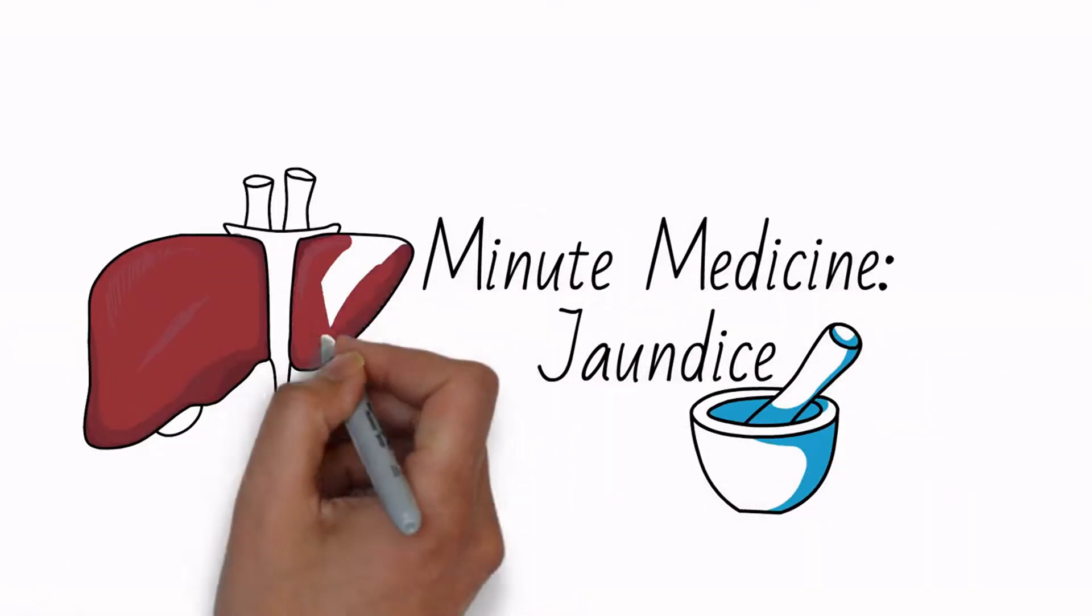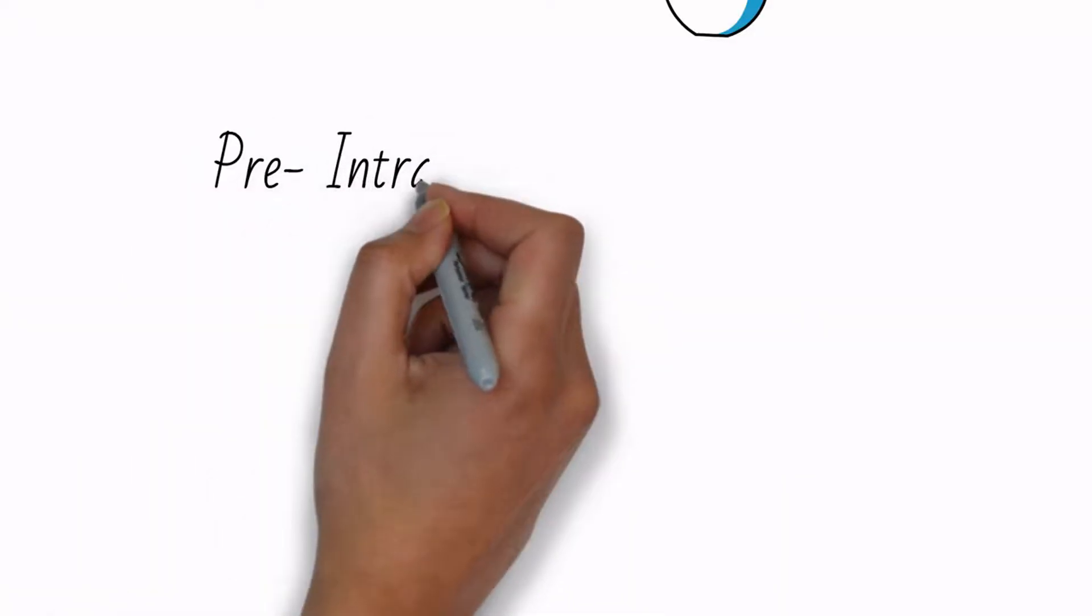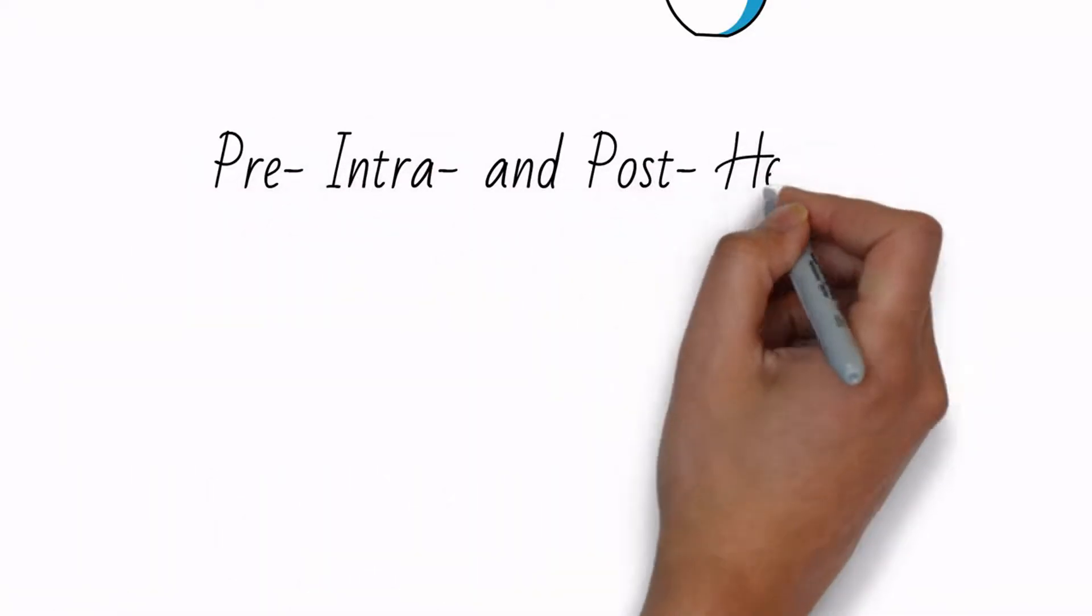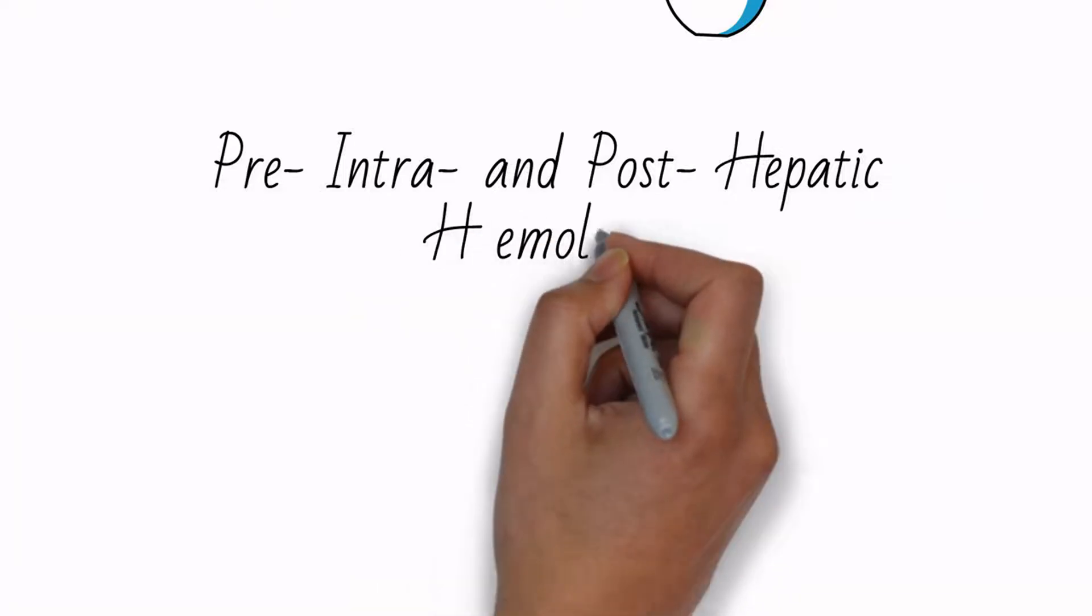Let's talk about jaundice. Jaundice can be due to factors of bilirubin metabolism and excretion before, in, or after the liver.